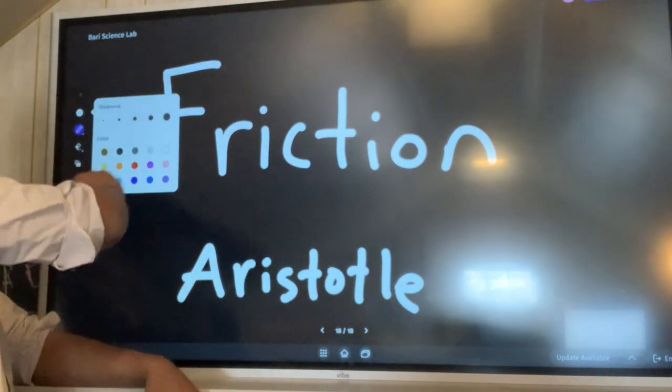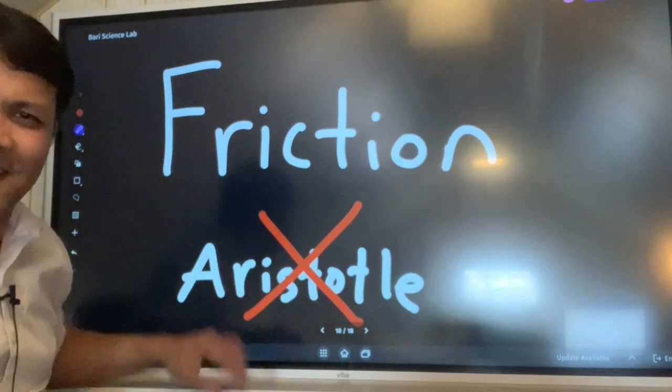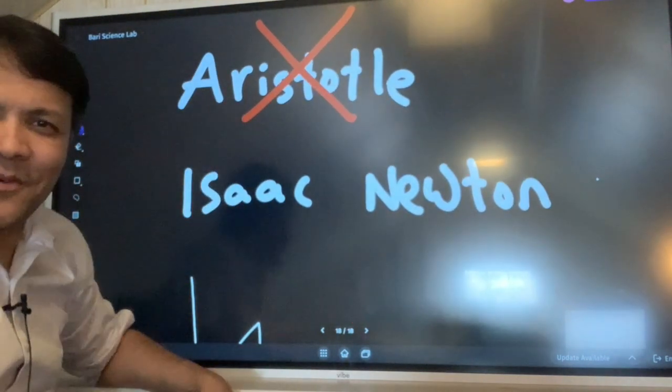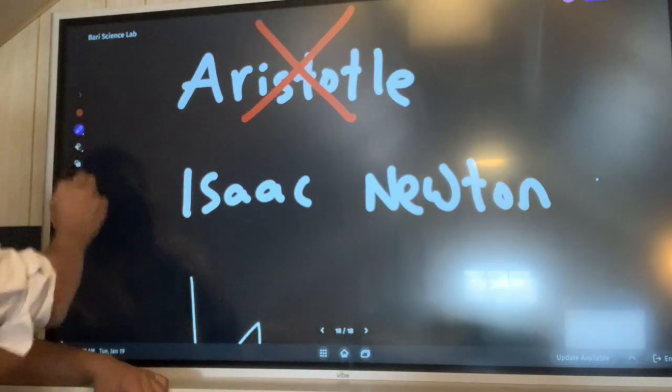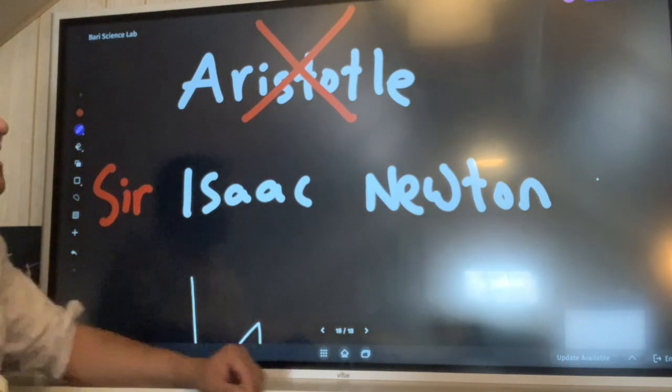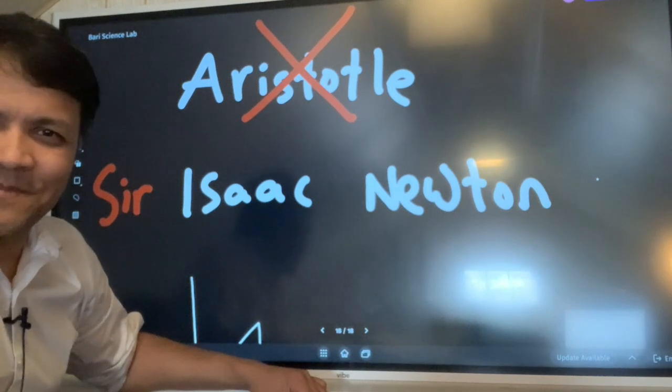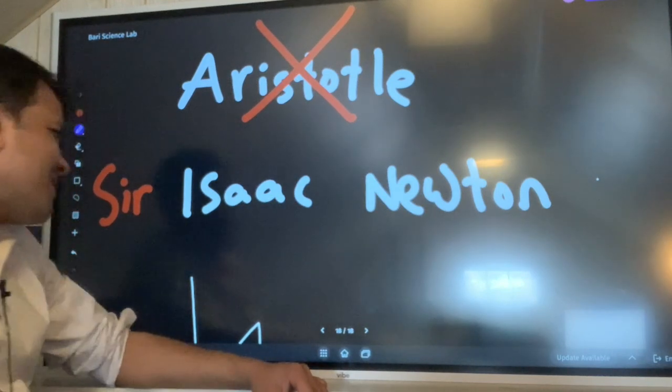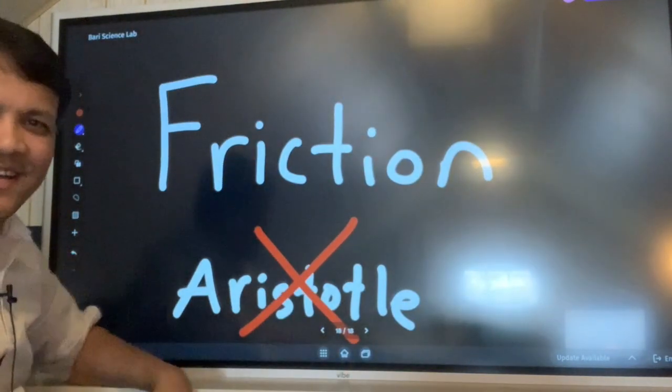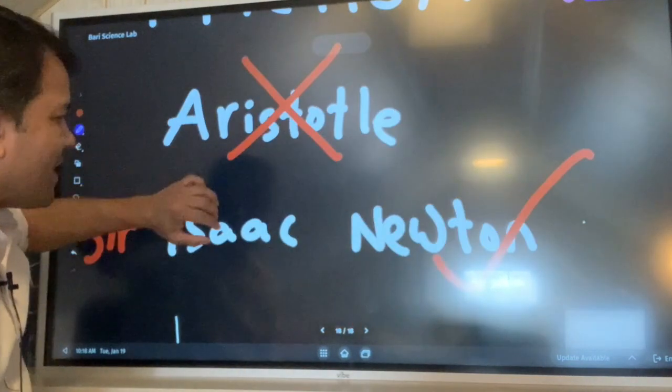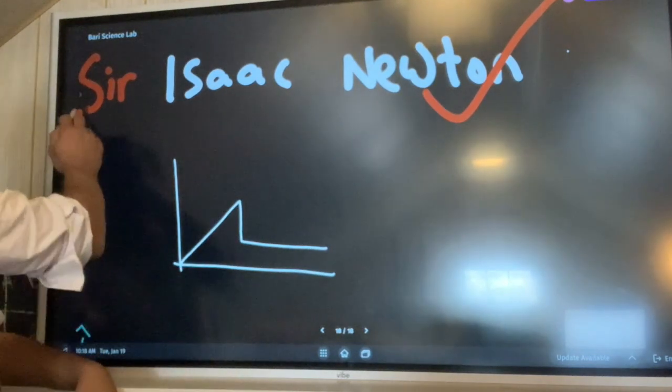Of course now we know that he was wrong. Sir Isaac Newton told us why objects slow down. Objects slow down according to Sir Isaac Newton because of friction, and how they slow down actually has something to do with this graph.